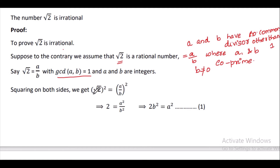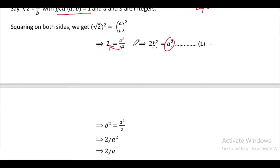Squaring both sides: the square root of 2 squared equals (a/b) squared. The left side gives 2, and the right side gives a squared over b squared. Cross-multiplying gives us equation number 1: 2b squared equals a squared.